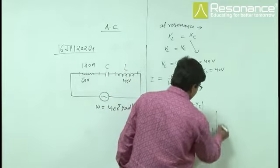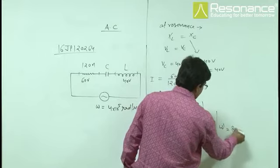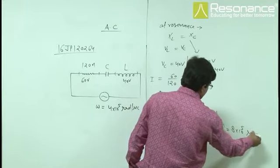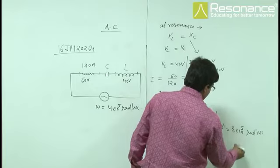we can find the value of omega dash. Omega dash comes out 8 times 10 to the power 5 radian per second, this is the answer.